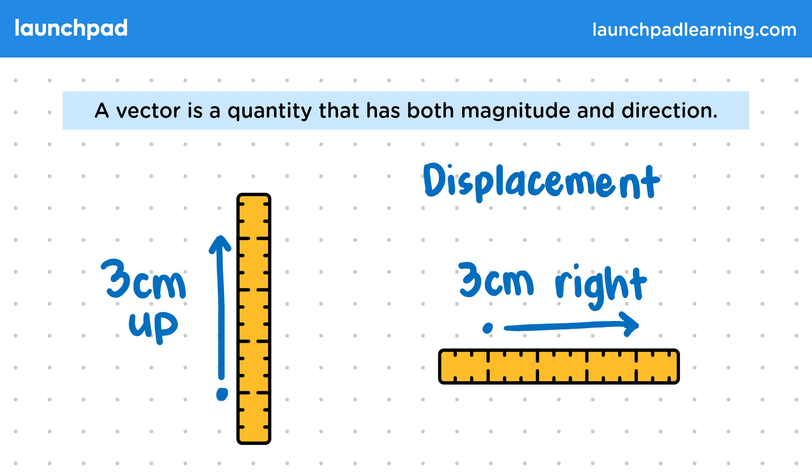This time, even though both measurements are 3cm, the fact that they are in different directions means these are not the same displacement. This is the key difference between scalars and vectors.